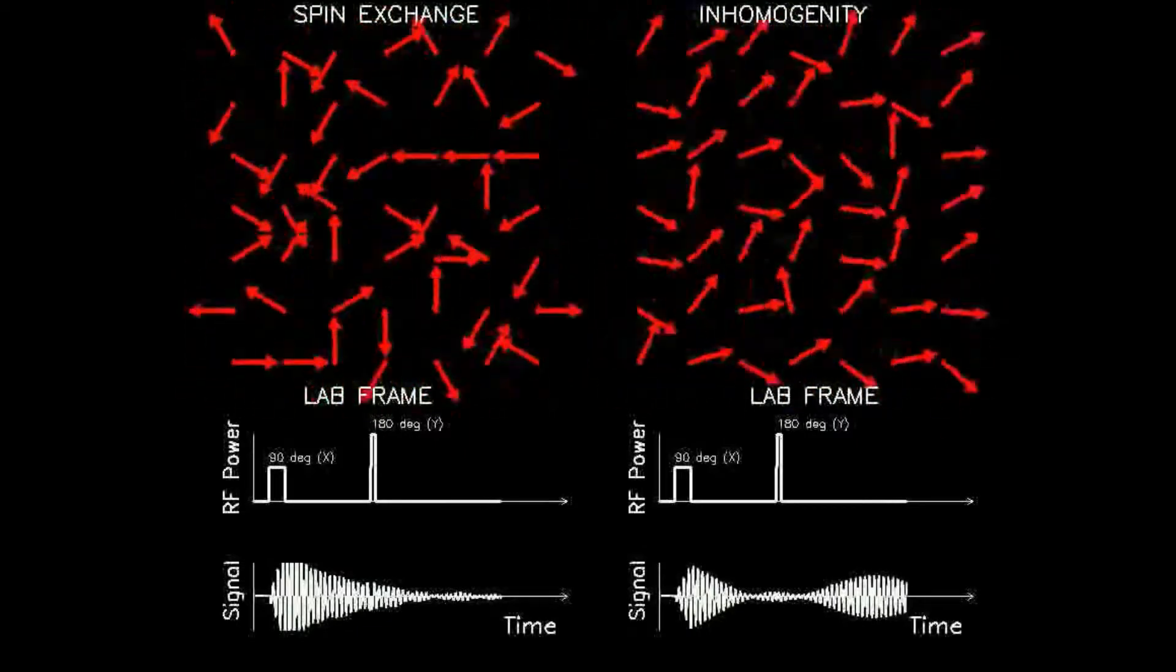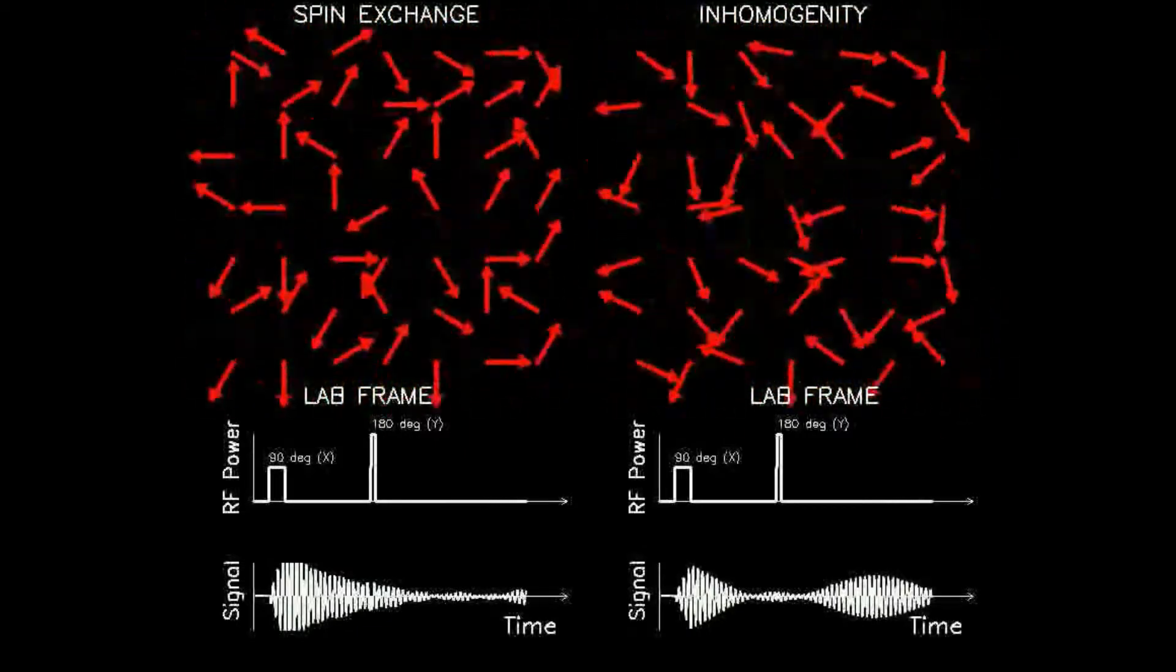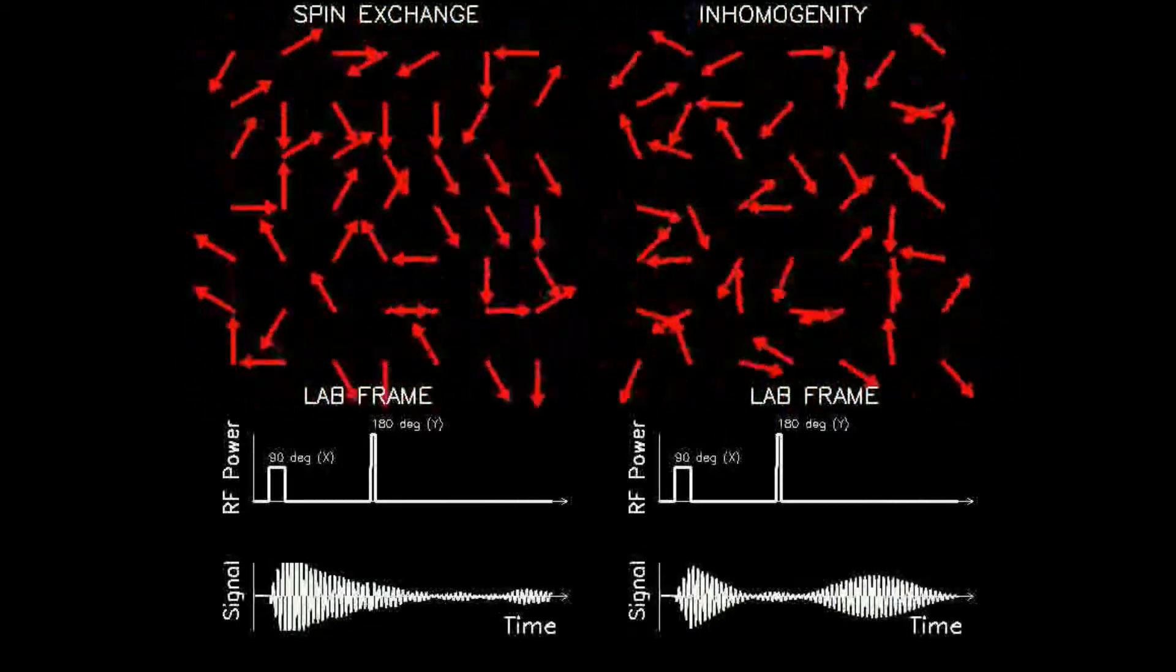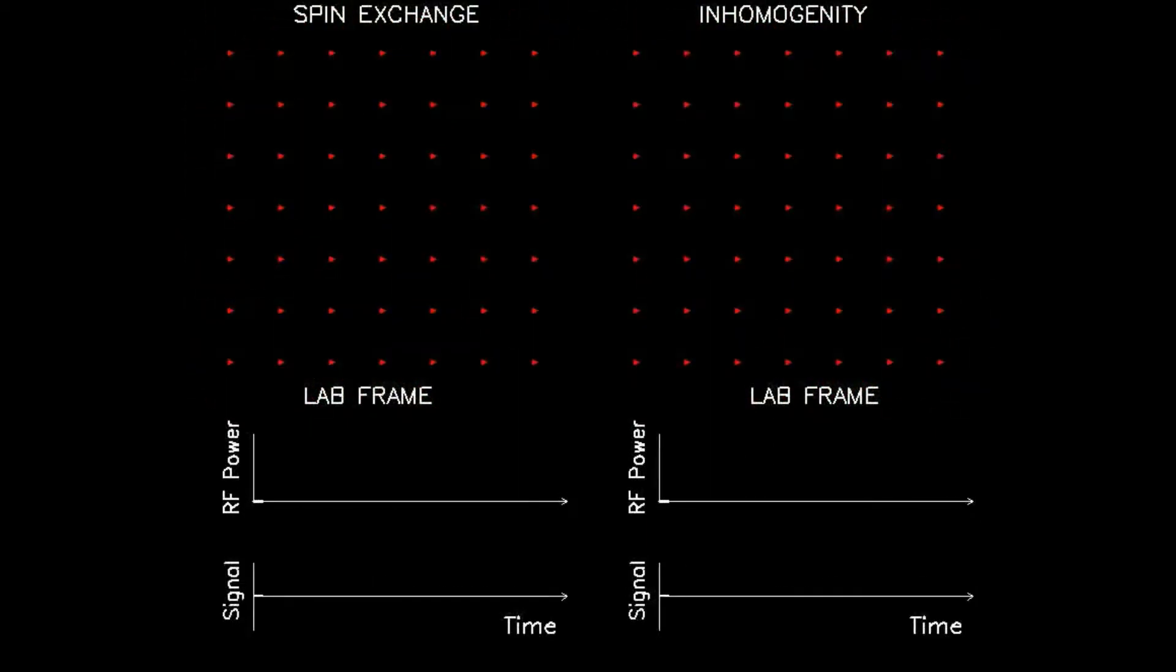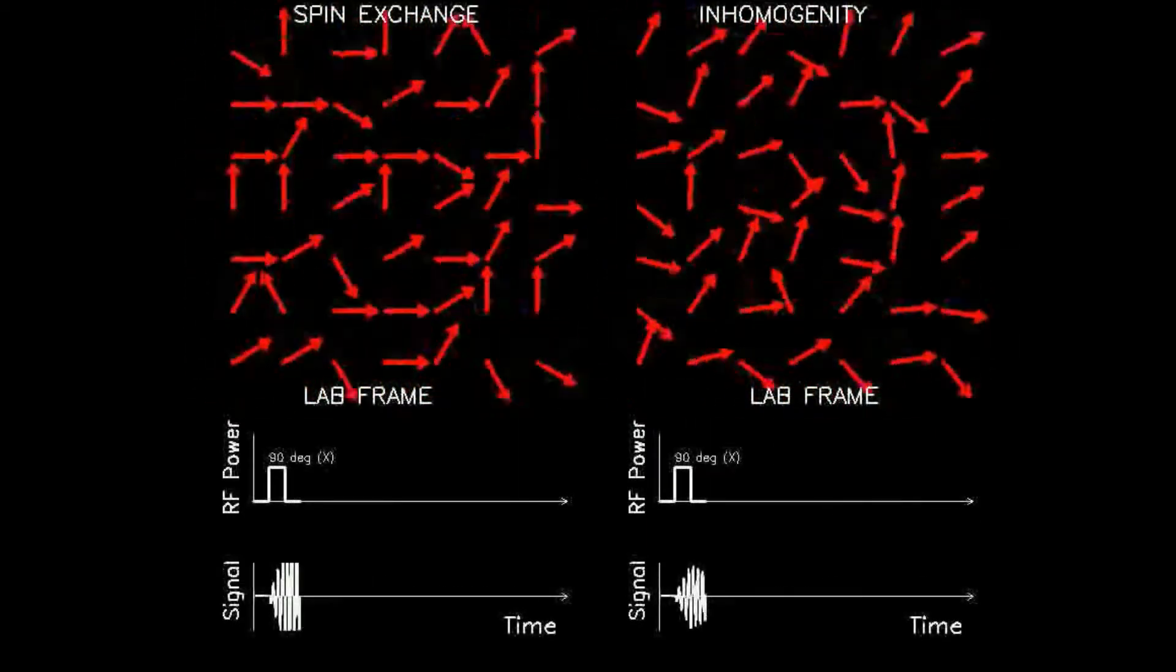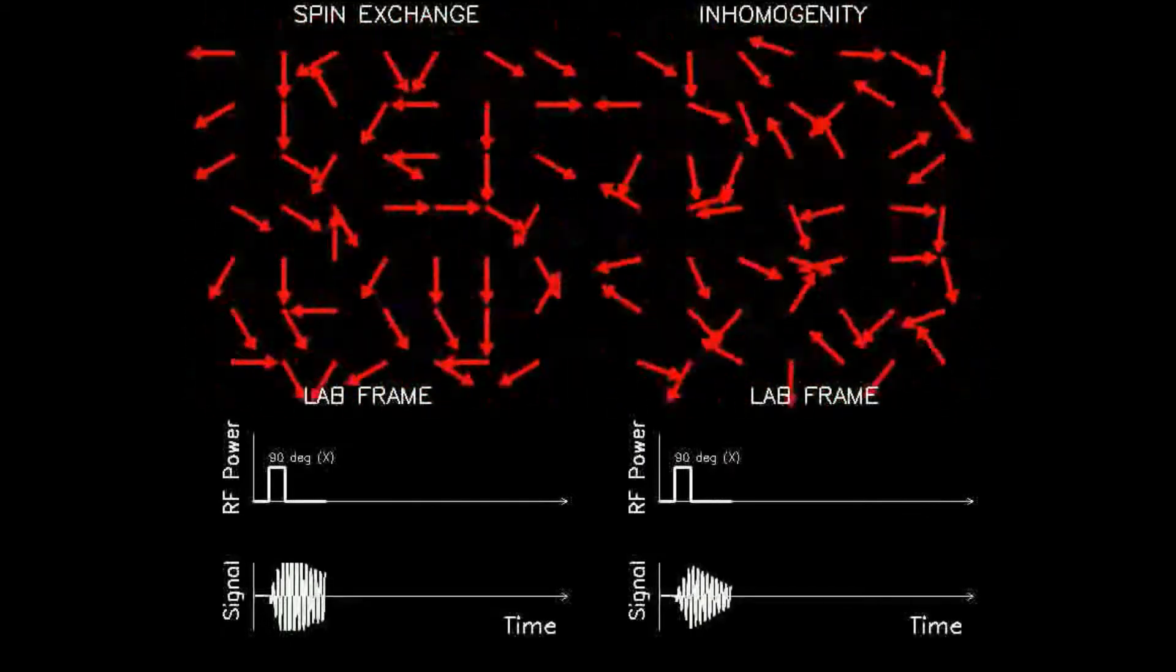The reappearance of rephased spins is called an echo. The analogy commonly used to describe this phenomenon is that of a marathon, where all of the runners are released at the start line, each running at a different but constant speed.